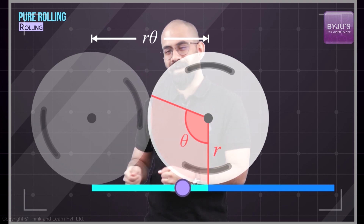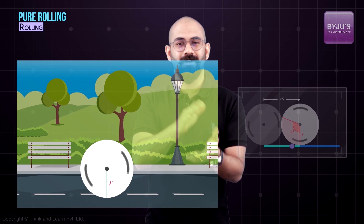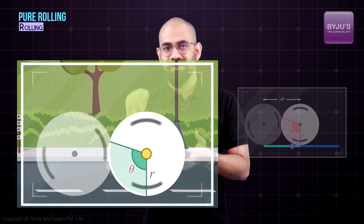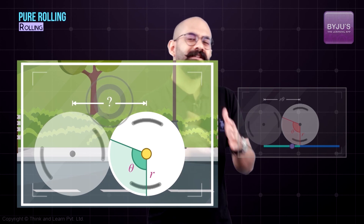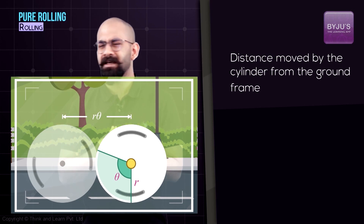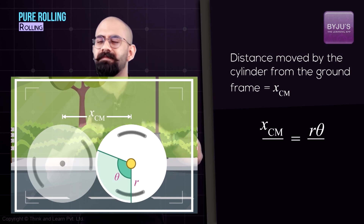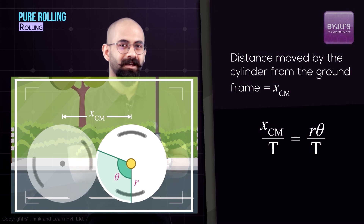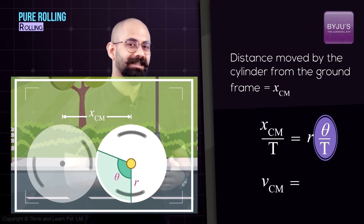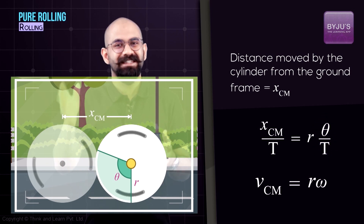Viewing from this frame is exactly equivalent to viewing a cylinder rolling on a flat surface. So if a cylinder is rolling on a flat surface and rotates through angle theta in the center-of-mass frame, the distance moved by the center of mass from the ground frame equals R times theta — that is, Xcm equals R theta. Dividing both sides by time, Xcm over T equals R times theta over T. Xcm over T is the speed of the center of mass, and theta over T is the angular speed omega. So we get Vcm equals R omega.